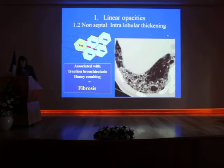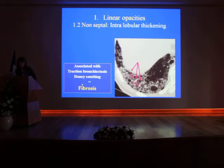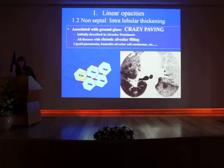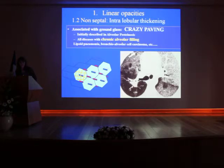There are also non-septal linear opacities where the reticulations are smaller than the size of a secondary pulmonary lobule, which is usually between one and two-and-a-half centimeters. When associated with traction bronchiectasis and honeycombing, it is due to fibrosis. If intralobular thickening is associated with ground glass, this feature is called 'crazy paving.' This sign was initially described in alveolar proteinosis, but it is not specific to this condition — it is seen with all diseases showing chronic alveolar filling, especially lipoid pneumonia or bronchioloalveolar cell carcinoma.